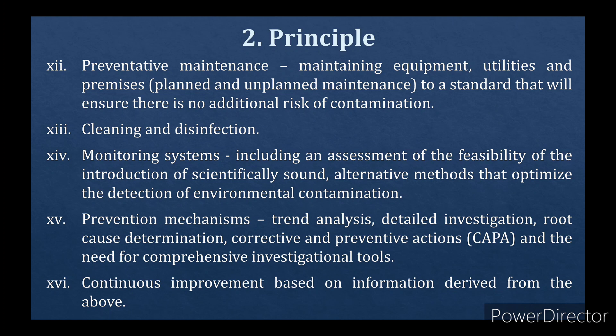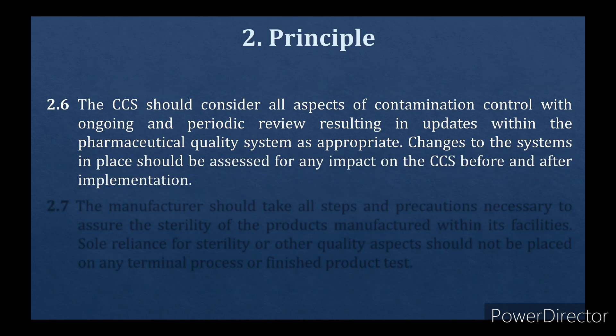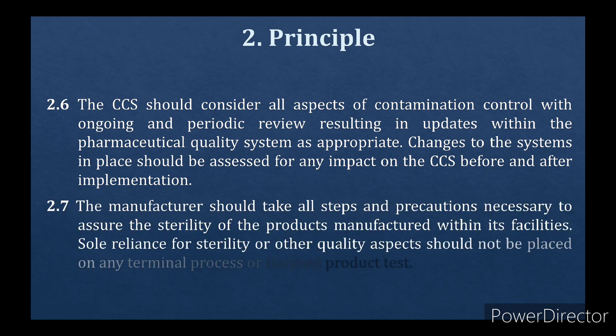These are the minimal requirements which need to be included in your CCS documents. All aspects of contamination control should be subject to ongoing and periodic review, resulting in updates within the pharmaceutical quality system as appropriate. Changes to systems in place should be assessed for any impact on the CCS before and after implementation. The manufacturer should take all steps and precautions necessary to assure the sterility of products manufactured within its facilities, and sole reliance for sterility should not be placed on any terminal process or finished product test.